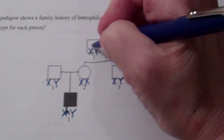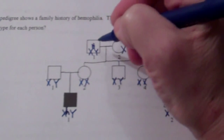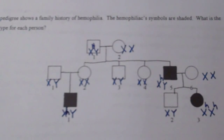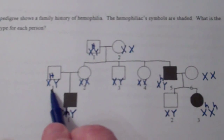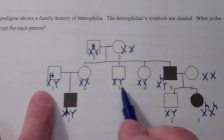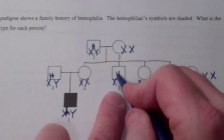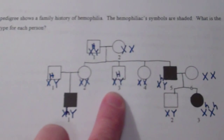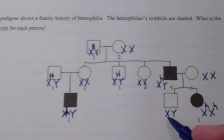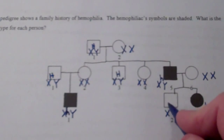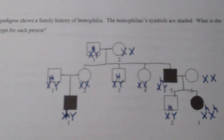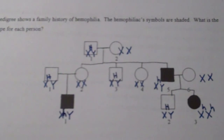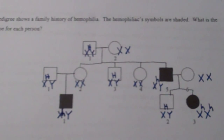Now let's fill in the allele for all of the males. If this is a dominant male it's going to be X^H Y... X^H Y... X^H Y, X^H Y. Congratulations, you're done with all of the males.